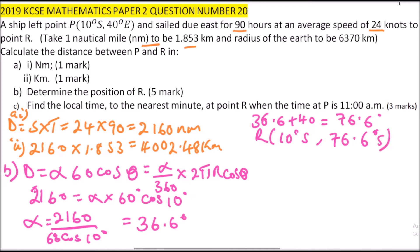Then, part C, we go to part C. Part C is, find the local time to the nearest minute at point R when the time at P is 11. So we say, local time, we say, latitude difference of P and R is equals to that 6.6. So time difference, we say, time difference equals,